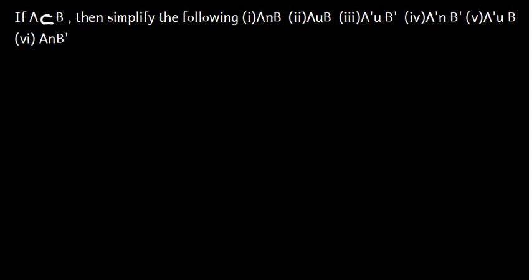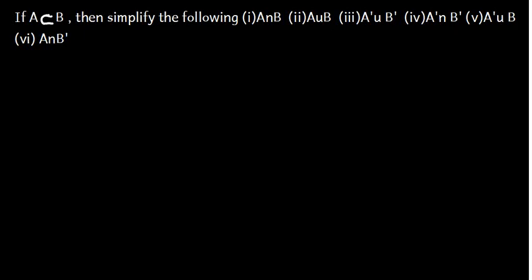Let's talk about the subset. Here is a question for you. If A is a subset of B, then simplify the following: Part 1, A intersection B. Part 2, A union B. Part 3, A complement union B complement. Part 4, A complement intersection B complement. Part 5, A complement union B. Part 6, A intersection B complement.